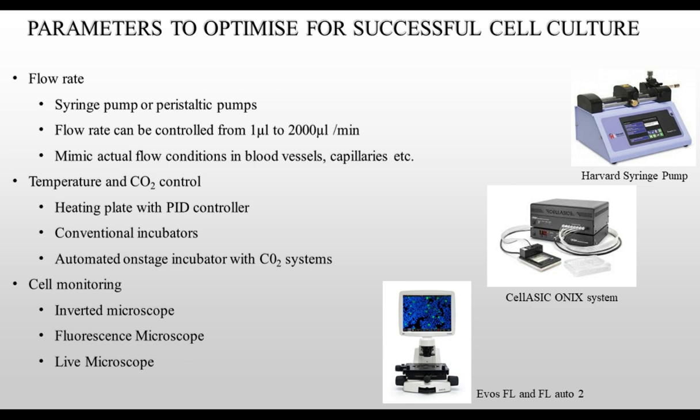There are certain parameters that need to be optimized for successful cell culture. First, flow rate can be set using a syringe pump or peristaltic pump, typically set to mimic actual flow conditions in blood vessels and capillaries, ranging from 1 to 2000 microliters per minute. Second, cells require physiological temperature and CO2 control; you can use a PID controller with a heating plate coupled with a CO2 controller, or an automated on-stage incubator with CO2 systems mounted on the microscope for live cell imaging. Lastly, cells can be monitored using an inverted microscope or fluorescence microscope.